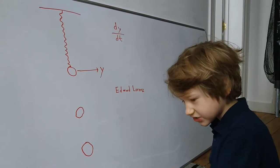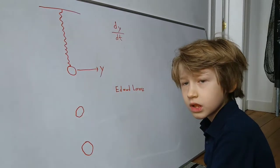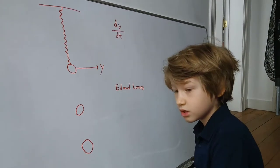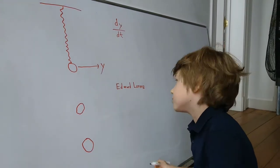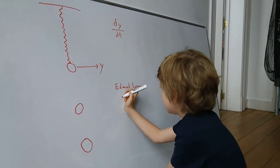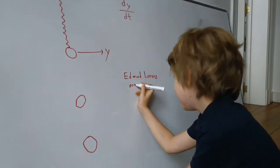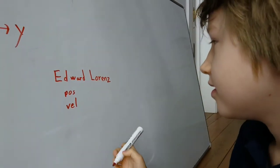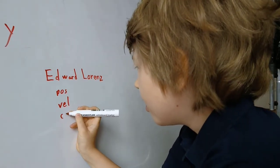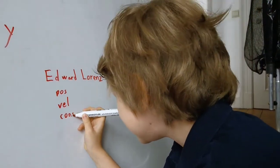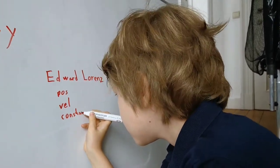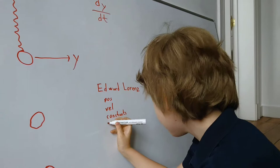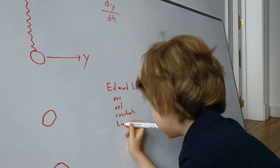Lorenz Attractor requires three variables. It requires a position, which is a three-dimensional vector, velocity, which is a three-dimensional vector, a whole bunch of constants. There are actually really four variables. There is also a time scale.